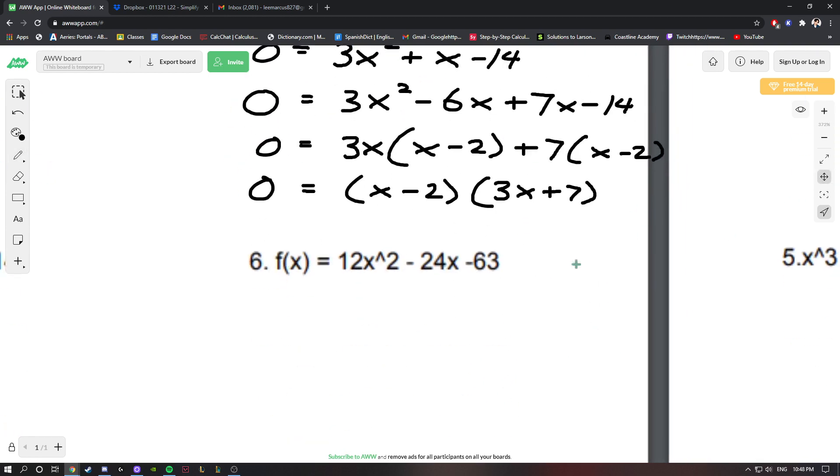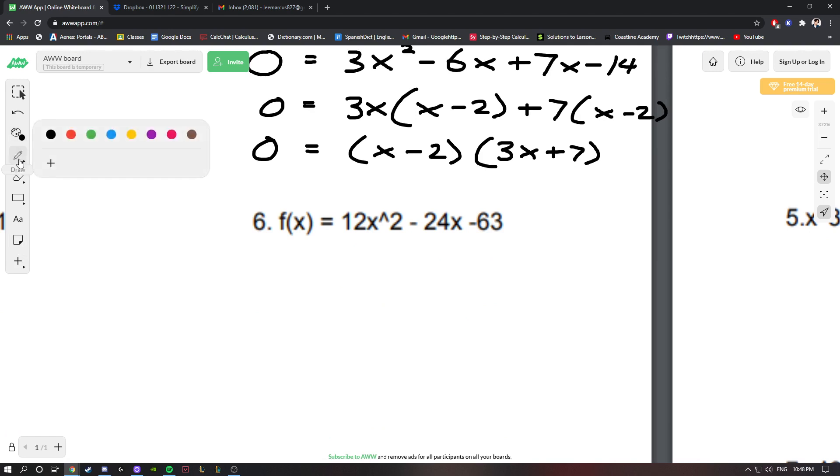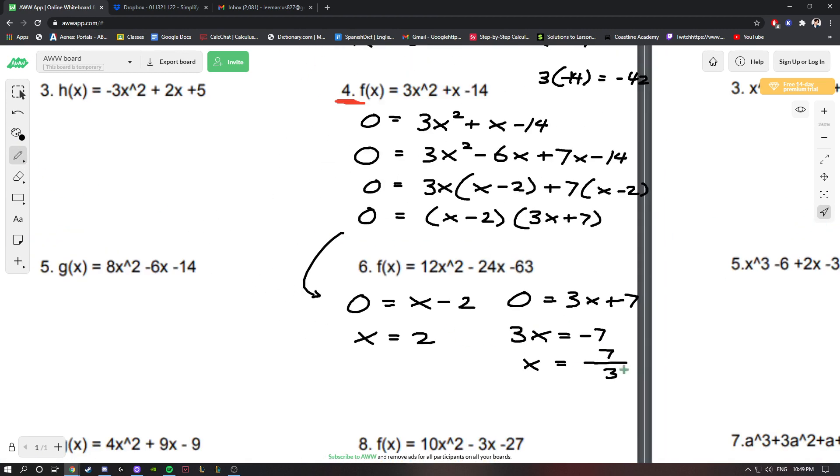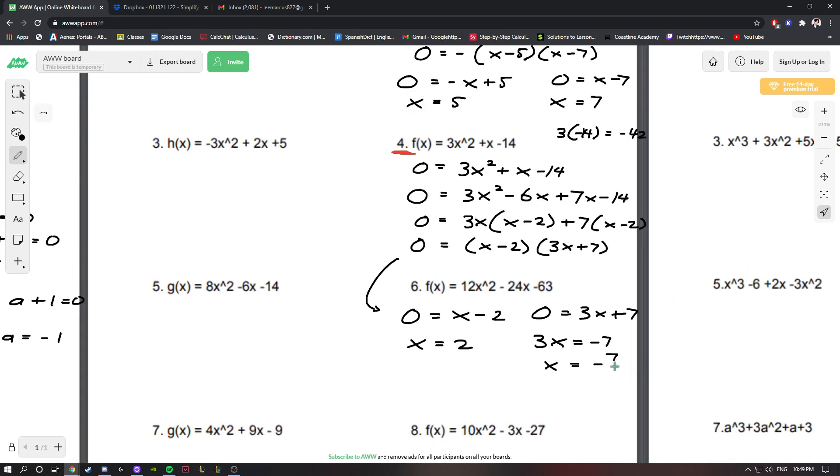When we set them both equal to 0, we're going to need a little more space. We get 0 = x - 2 and 0 = 3x + 7. When we set both of our factors equal to 0, x = 2 and 3x = -7, so x = -7/3. That's a negative, by the way.